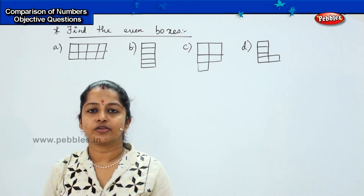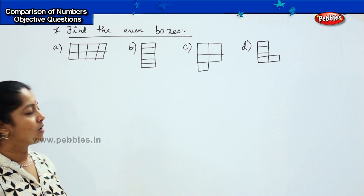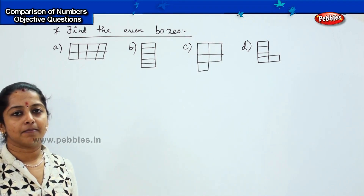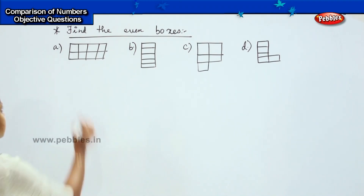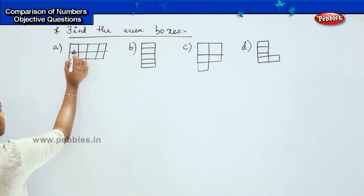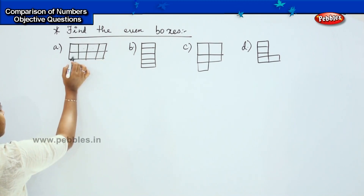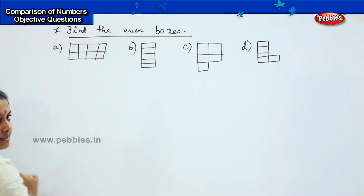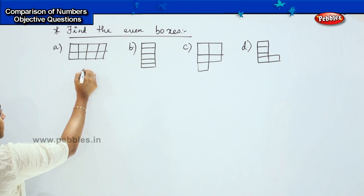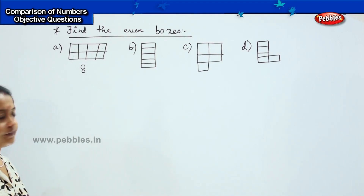You have to tell me which box has got an even number. Shall we count the boxes? 1, 2, 3, 4, 5, 6, 7, 8. So Box A has got 8.